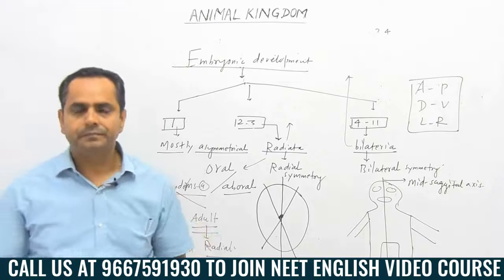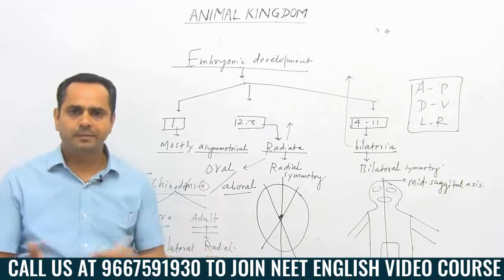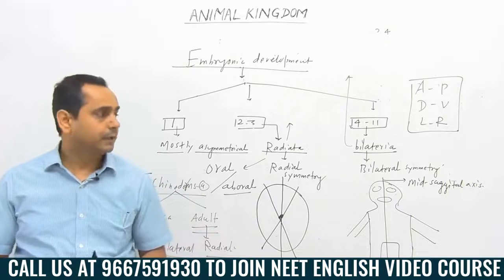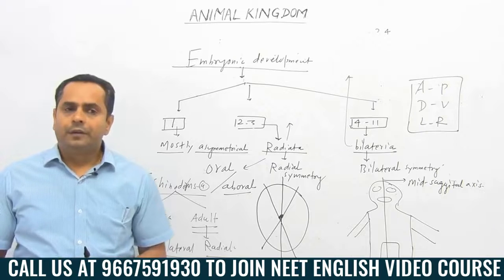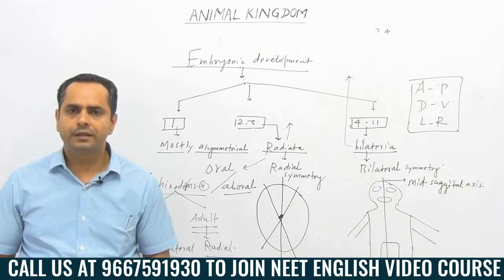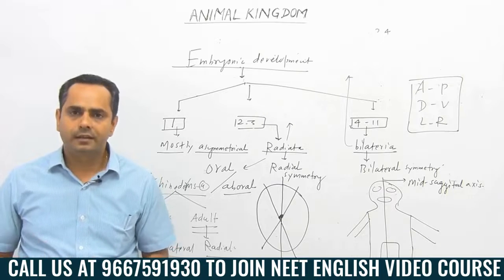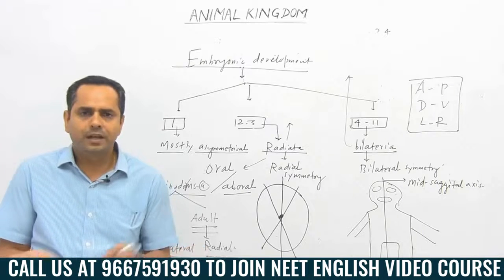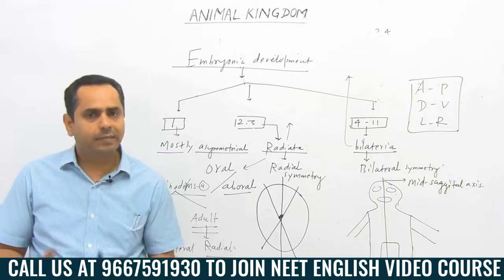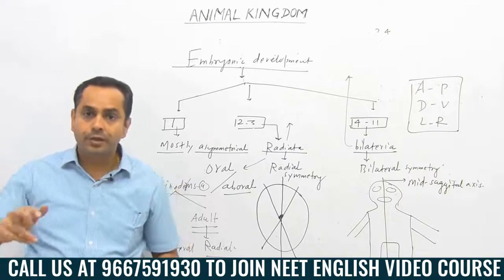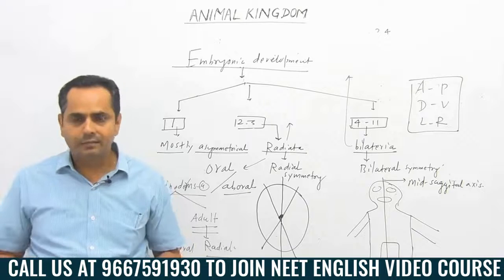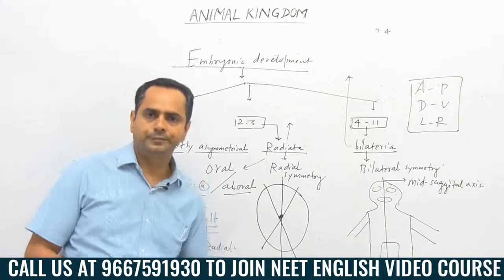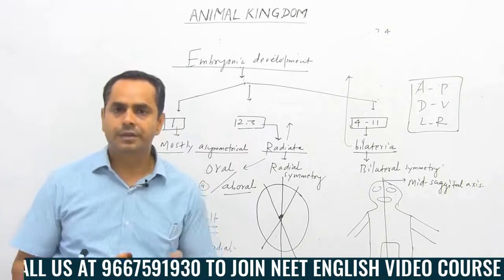That is all about symmetry — what is Radiata, what is Bilateria, and how we group the phyla in these categories. Now, further classification is based on the basis of body cavity or coelomic cavity. Because Radiata is a very small group, we don't need to classify it further. But we need to classify Bilateria — the bigger group — into different kinds depending upon their body cavity or coelom.